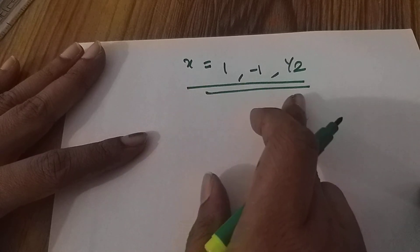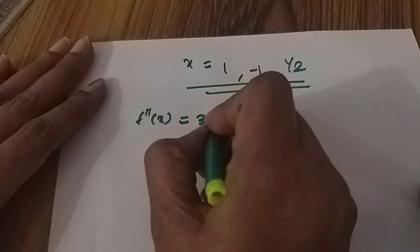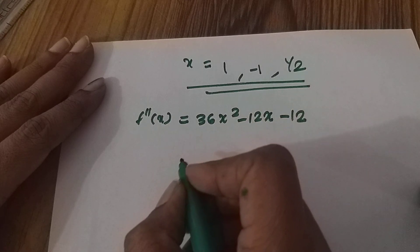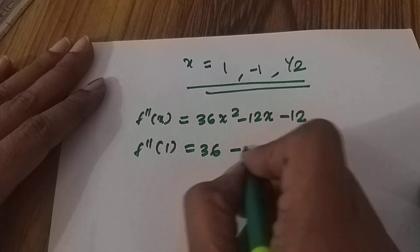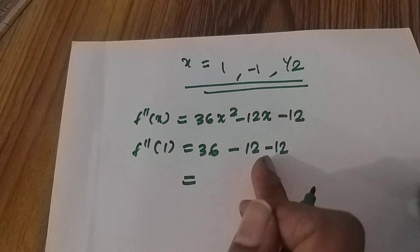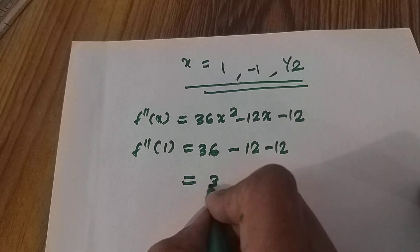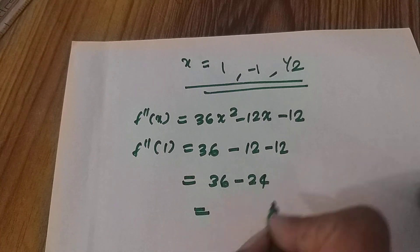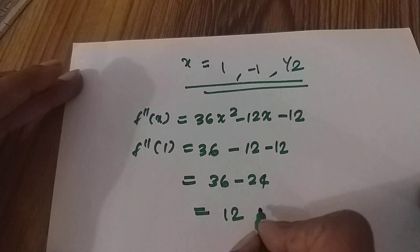Now computing f''(x): 36x² − 12x − 12. For x = 1/2: 36(1/4) − 12(1/2) − 12 = 9 − 6 − 12 = −9. For the second critical point, 36 − 12 − 12 = 12, which is equal to 0.